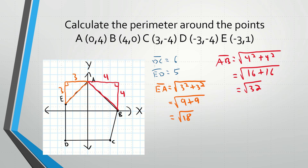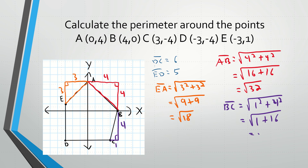Let's do the last slanted side, BC. We surround it with another right triangle. Counting the legs: one distance is 1 and the other is 4. So BC is going to be the square root of 1 squared plus 4 squared, which gives us 1 plus 16, so BC equals the square root of 17. Now we have all five distances.